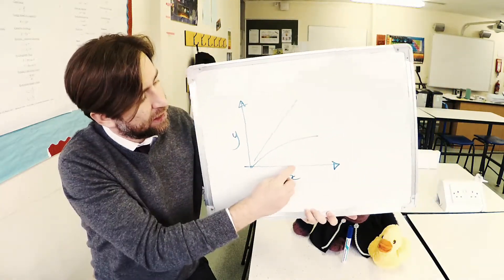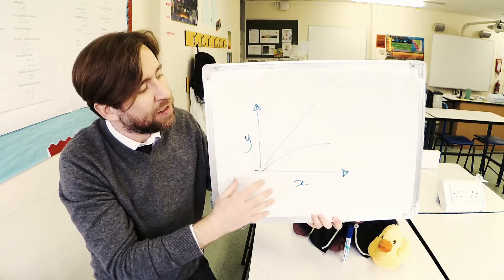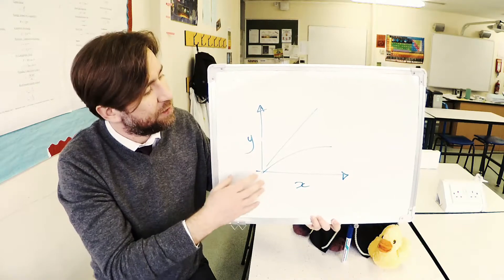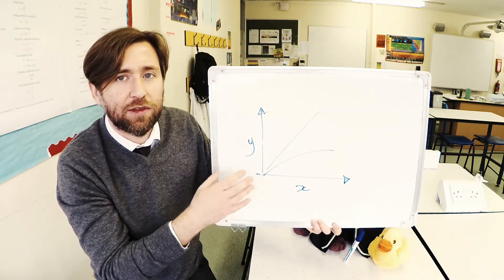It means if I double X, I double Y. And lots of the equations actually fall into this kind of shape. Lots of laws fall into this kind of shape. You need to be able to recognise that shape and understand how crucial that is in GCSE Physics.